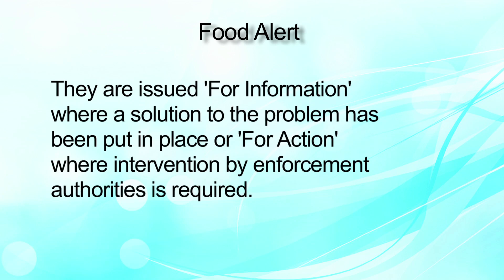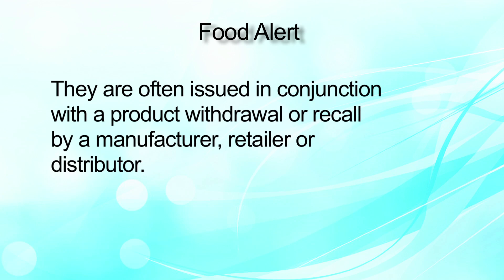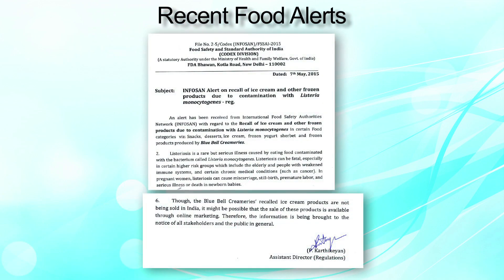Basically, food alerts involve two kinds of communications: one is for information and one is for action. These alerts are often issued in conjunction with product withdrawals or recalls. Food alert is something that makes people alert about food if there is any food safety problem associated with it — it could be imported food or domestic food. If you go to the FSSA website and use the search engine to look up food alerts, you will get recent food alerts issued by the FSSA authority.